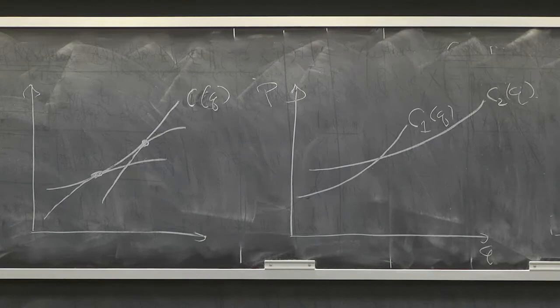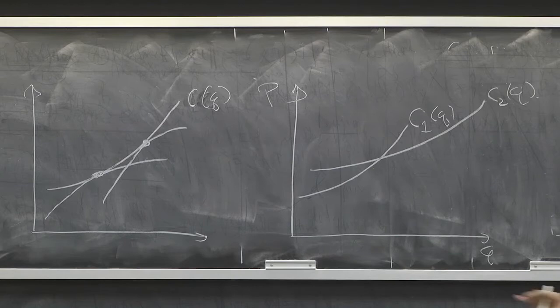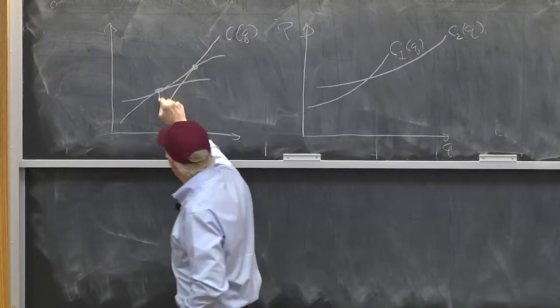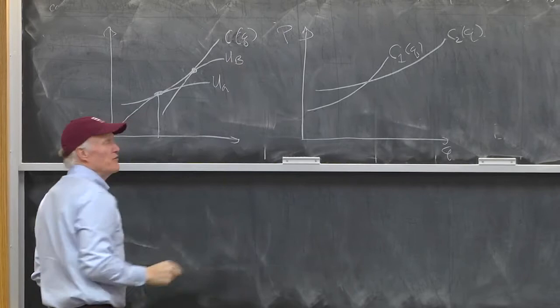Yeah. Would we see more than one point? No, there's only one kind of consumer. Remember, this was two kinds of consumer, one kind of firm. We got this picture with two points. Call this UA. This is UB. Two types of consumers, A and B. One type of firm.